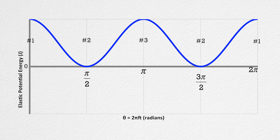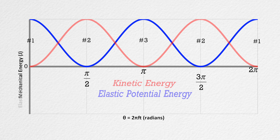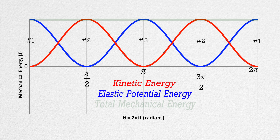Just like kinetic energy, the elastic potential energy is never negative because the displacement from equilibrium position is squared. At the equilibrium position, there is no elastic potential energy because the displacement from equilibrium position is zero. When the mass is at the amplitude positions, one and three, the elastic potential energy is at its maximum. Notice what happens when we add kinetic energy to the graph in red, and then add the kinetic energy and the elastic potential energies together to get the total mechanical energy, which is now on the graph in green.